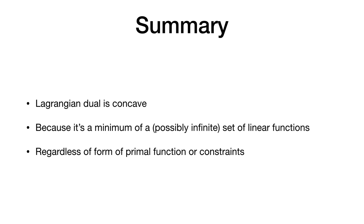One power of the Lagrangian dual is that it provides a bound on the objective value — a lower bound despite the duality gap. In machine learning we're doing non-convex optimization everywhere now, but not so much dual optimization. Maybe there are opportunities to leverage that concavity. It's not entirely clear yet.